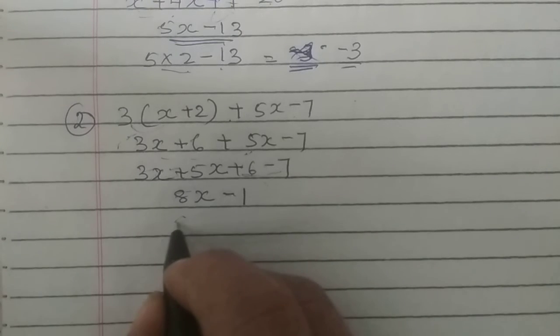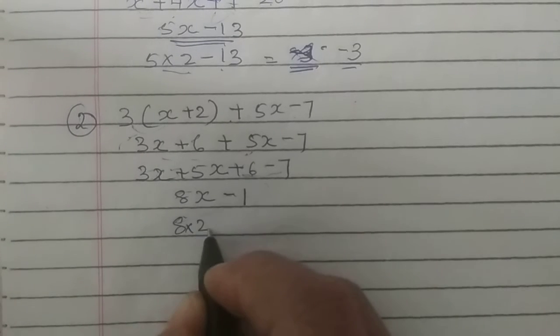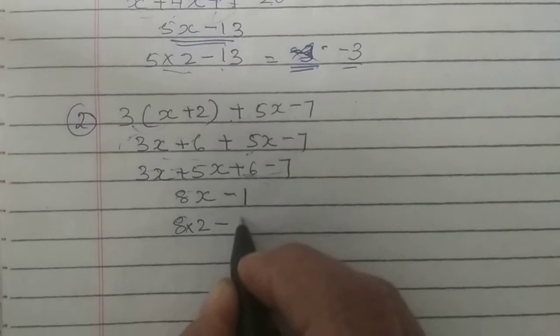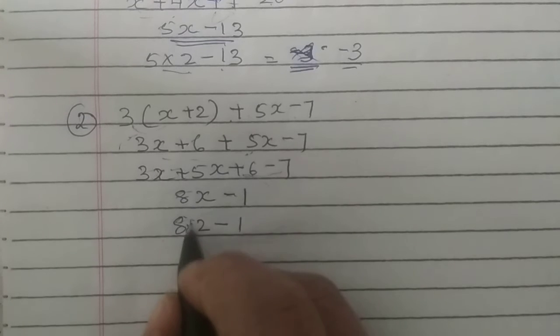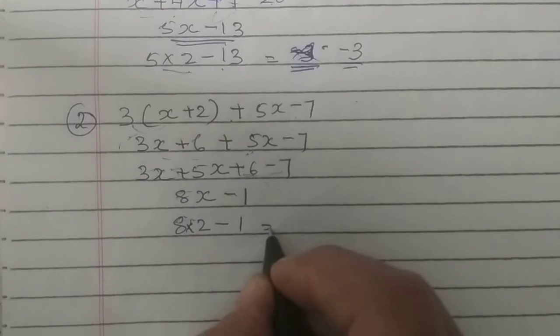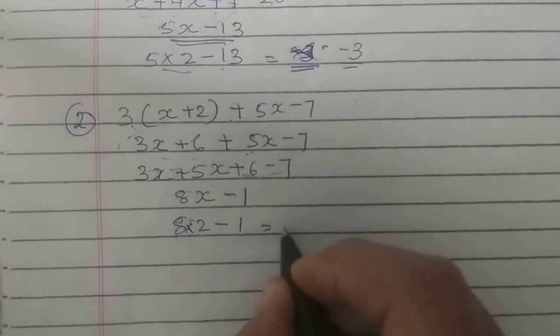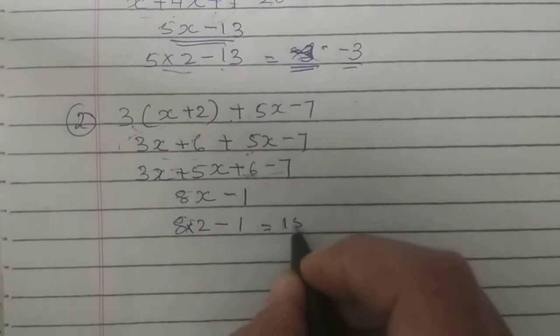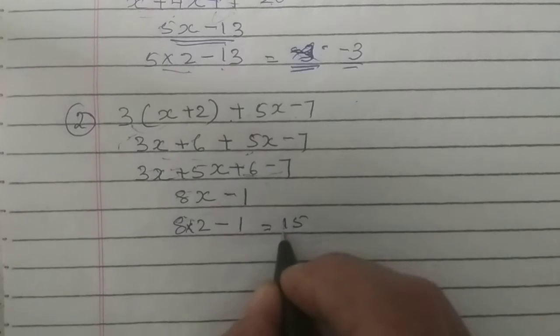Now substituting x equals 2: 8 into 2 minus 1 equals 15. 15 is the answer.